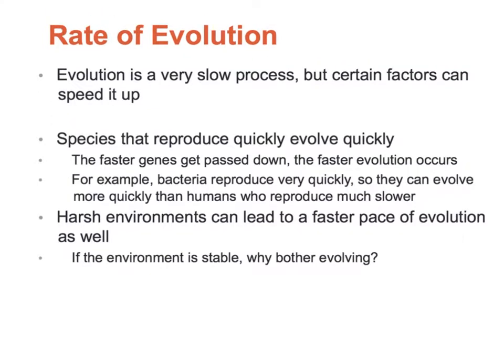The rate of evolution is typically a very slow process, but certain factors can speed it up. For example, the speed at which an organism reproduces — bacteria can reproduce very quickly. Starting with one bacterial cell, within 24 hours you can end up with a billion different cells. Because they reproduce so quickly, they can evolve quickly. Bacteria resistant to antibiotics survive and reproduce, so evolution for them is relatively quick. Organisms that reproduce slower will evolve much more slowly.